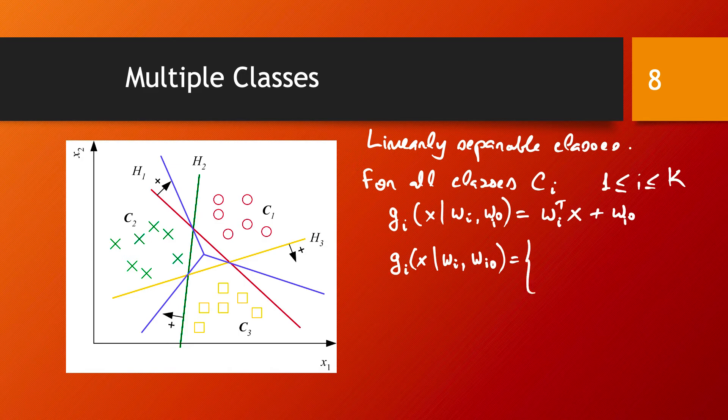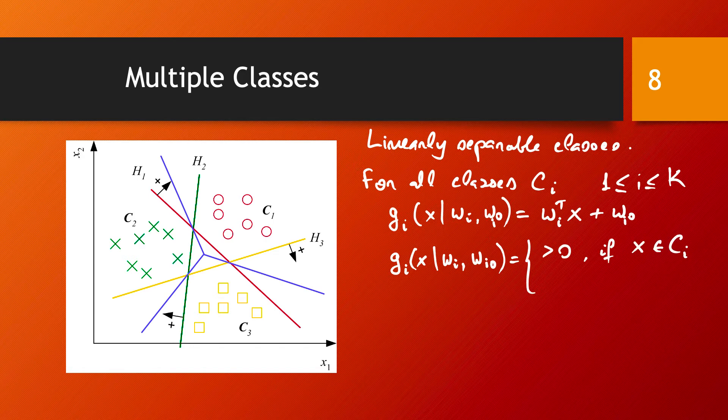we aim to choose it in such a way that it's larger than 0 if we have x from our class CI. And it's going to be smaller than or equal to 0 otherwise.